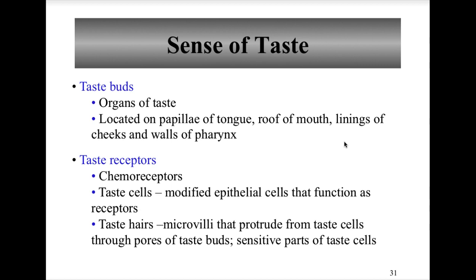The sense of taste is gustation. The main organ is the taste buds on the tongue. Taste receptors are chemoreceptors located in the taste buds themselves. The sensitive portion is a taste hair, which protrudes out of a taste pore — an opening in the taste cell, which makes up the taste bud. The taste bud is composed of a taste cell within a taste pore, which secretes a taste hair. The chemicals must be dissolved in saliva to be detected, and they undergo rapid sensory adaptation.